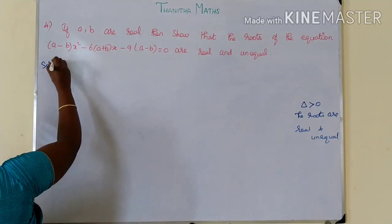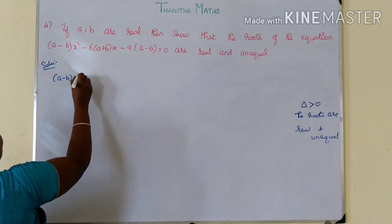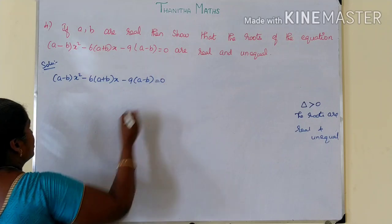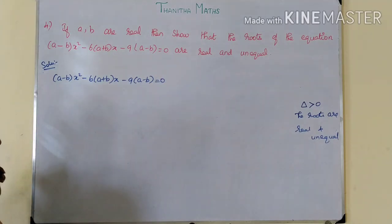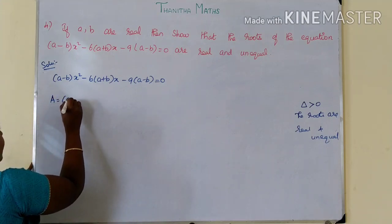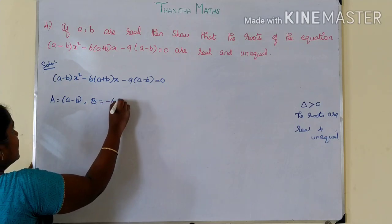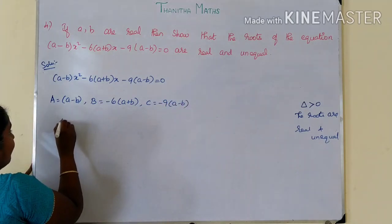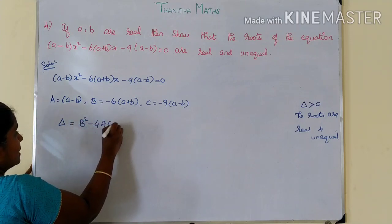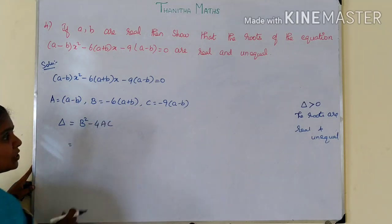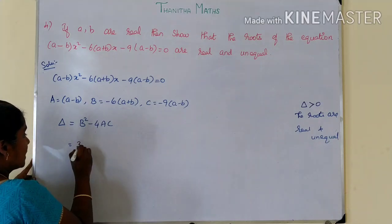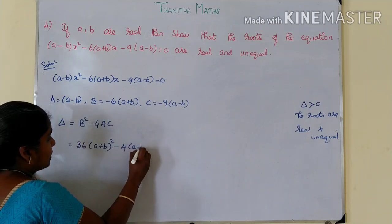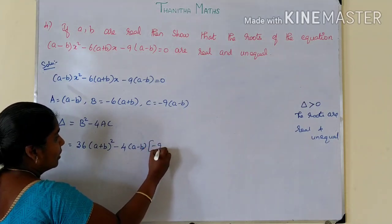So we have to find the value of delta. Delta is equal to b squared minus 4ac. For this equation, b is minus 6 into (a plus b), so b squared gives 36 into (a plus b) the whole square. Then minus 4 into a, which is (a minus b), and c, which is minus 9 into (a minus b).